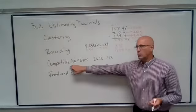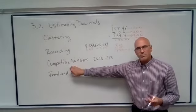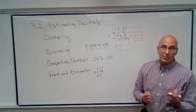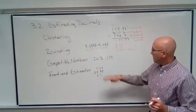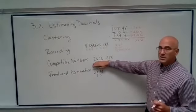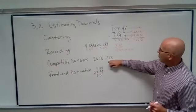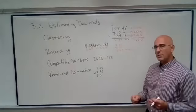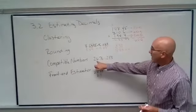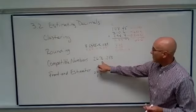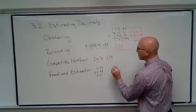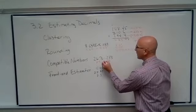So now we can do what's called compatible numbers. Let's make the numbers easy so that we can do the operation easier. So we have 26 and 76 hundredths and 2 and 93 hundredths and we're multiplying them. So if we want to find an approximation, we could say, well, 26 and 76 hundredths is really close to 25, and 2 and 93 hundredths is really close to 3.